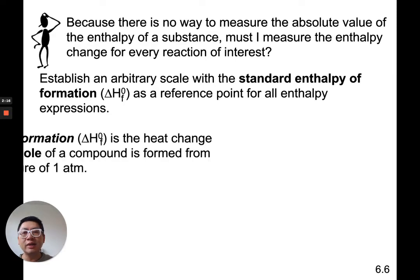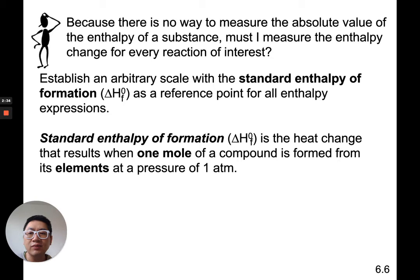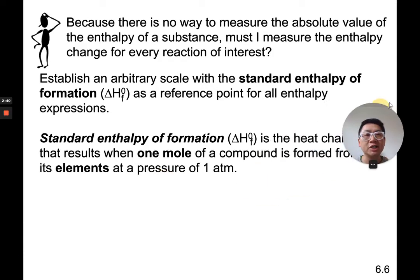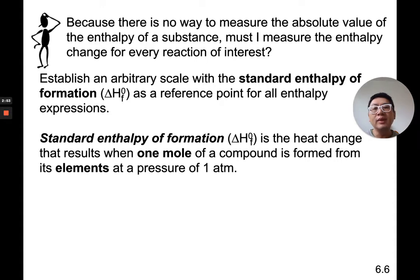What does standard enthalpy of formation even mean? The symbol for it is delta HF° — delta HF with a degree symbol above it. Standard enthalpy of formation is the heat change that results when one mole of a compound is formed from its elements at one atmosphere. So, how much energy — what is the energy change — to make one mole of something from its elements? It is the energy change, whether it releases heat (exothermic) or is endothermic, to make one mole of that substance from its elements.